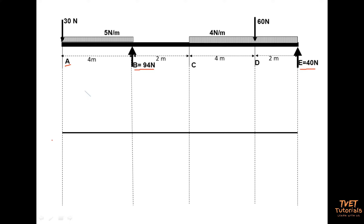When we do a shear force diagram, this labeling is important because at every label the graph is going to change. We use the labels in order to draw the diagram. We begin by drawing a horizontal line called a baseline — it's the same size as the beam. You can use a scale, for example four centimeters equals four meters, so one centimeter equals one meter.